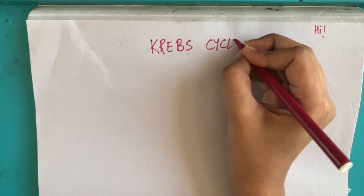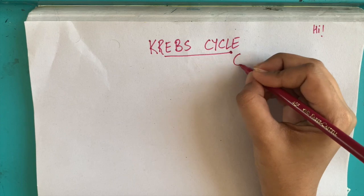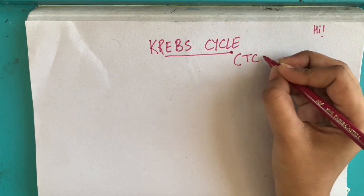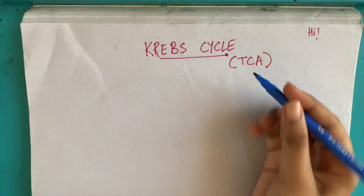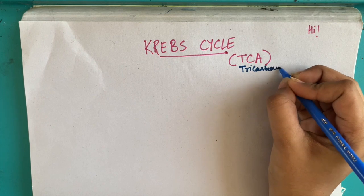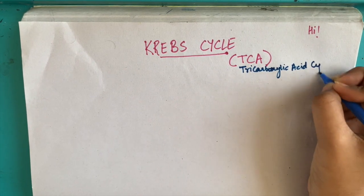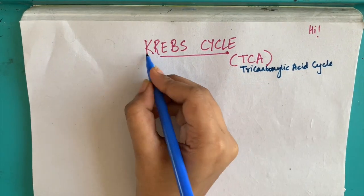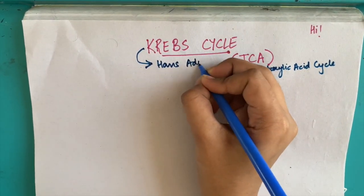Krebs cycle is a part of respiration in living organisms. It acts as an intermediate between glycolysis and the actual production of ATP. It can also be called tricarboxylic acid cycle or TCA, but it gets its name Krebs cycle from the person who discovered it, whose actual name is Hans-Adolf Krebs.